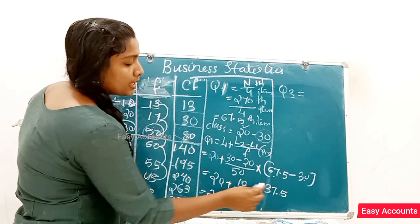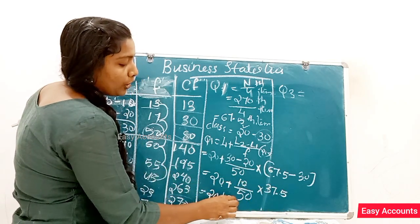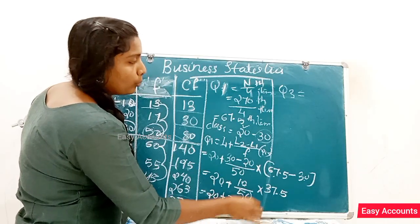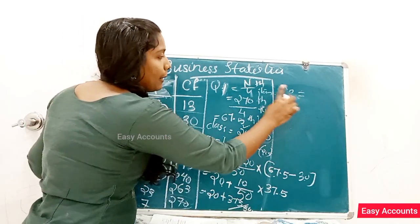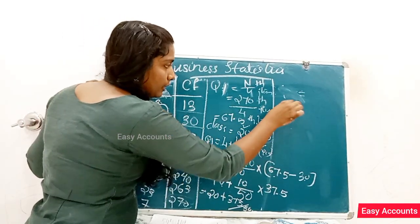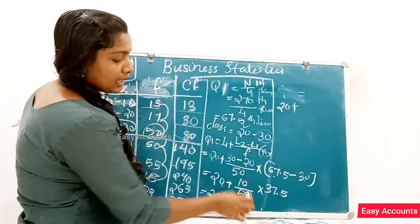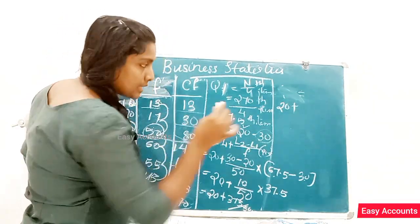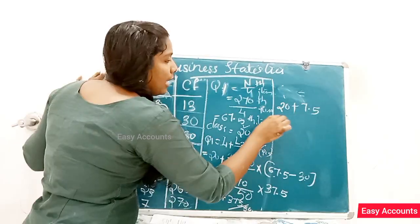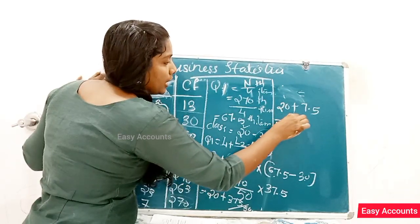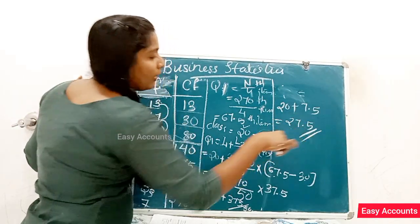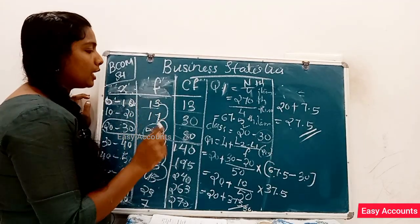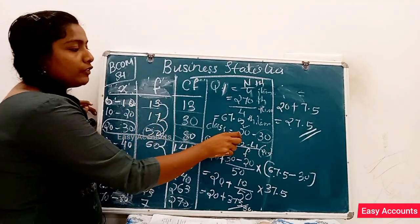This gives us 37.5. 27.5 is a total, giving 10. Then 20 is a total of 10.